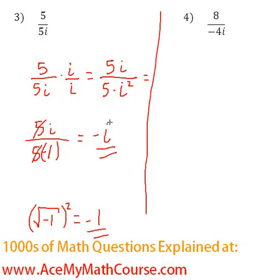About this guy over here. 8 over negative 4i. Okay, so let's multiply top and bottom by i again.